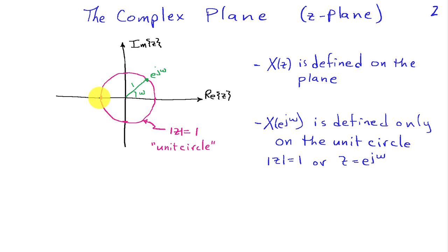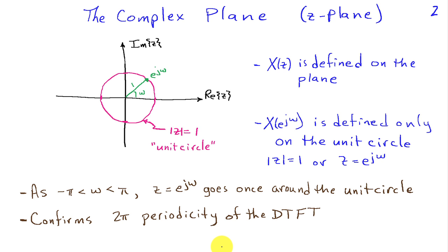And we can refer to this unit circle in terms of magnitude of Z equals 1, all Z that satisfy that, or we can define it as Z equals E to the J omega, equivalent descriptions.